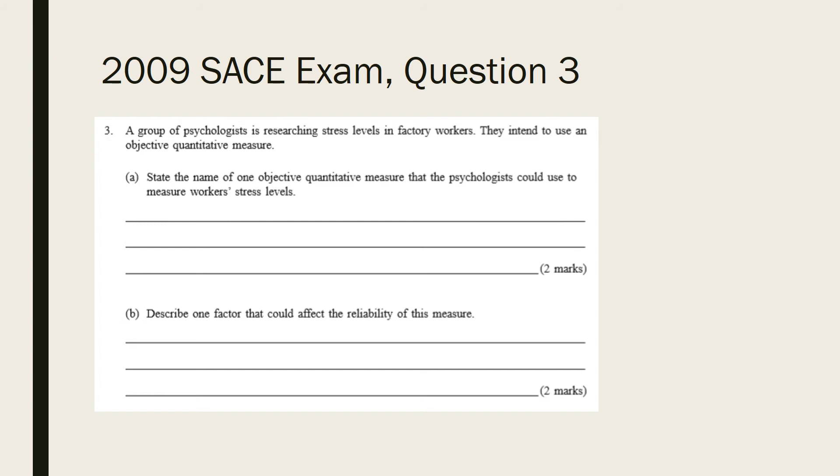For the sake of part b, I'm going to assume that the answer for part a is heart rate. Because part b says describe one factor that could affect the reliability of this measure, your answer in b needs to be consistent with a. So if we've written heart rate as being an objective quantitative measure for stress levels in a, we're describing a factor that could lower its reliability in part b.